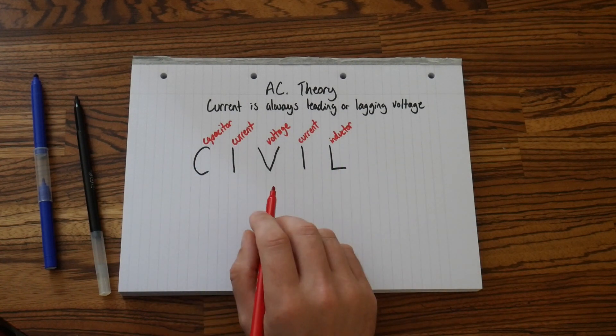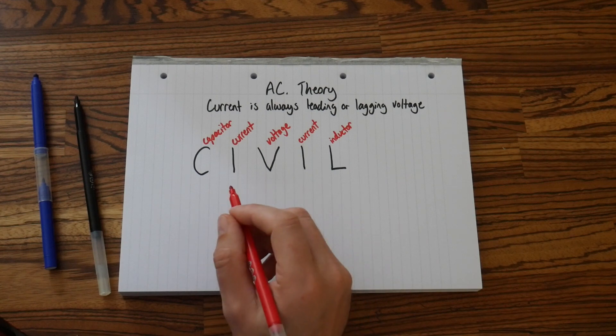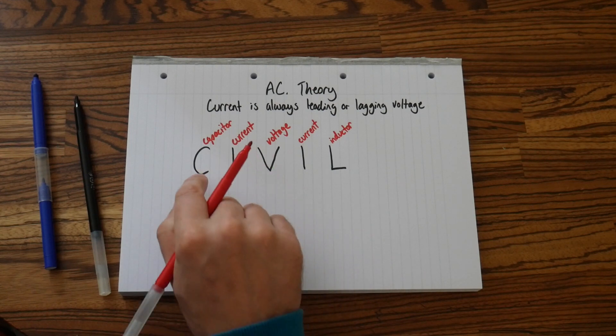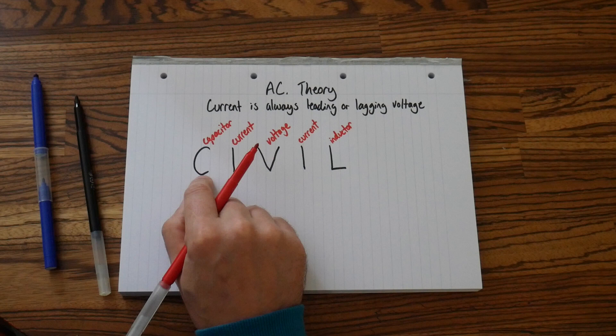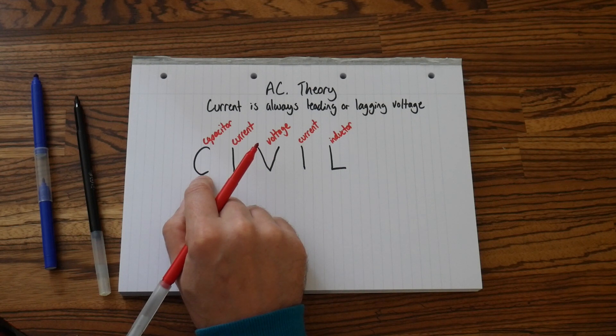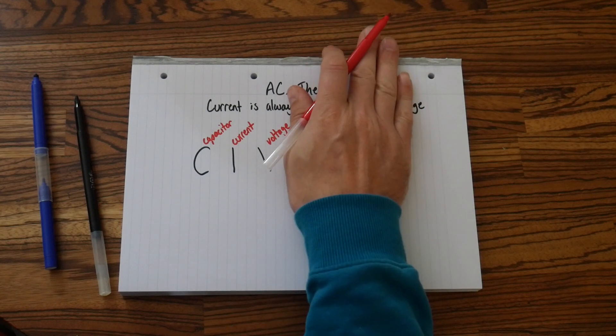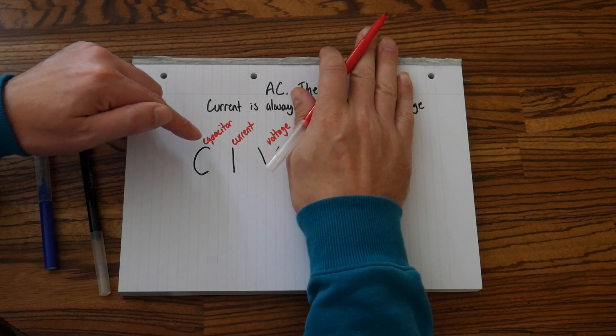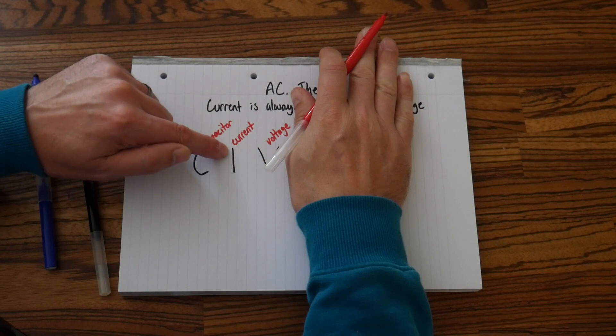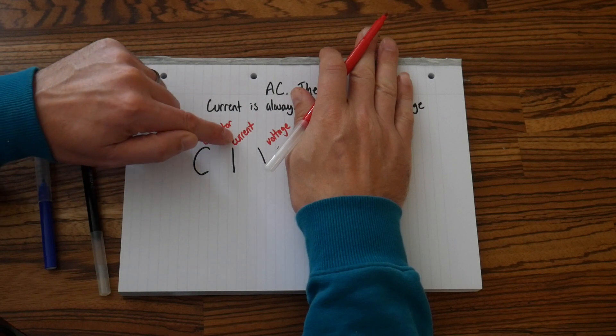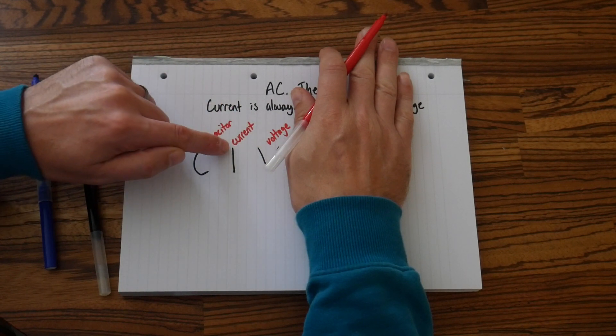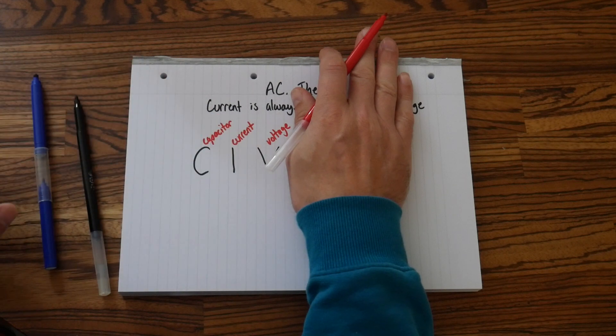So the way we use this is, if you have a capacitor in your circuit, if you've got a purely capacitive circuit, you'll just cover up the second half. So if we just cover up that, we've got capacitor, current. The word current is coming before voltage. So my current leads voltage, comes before.